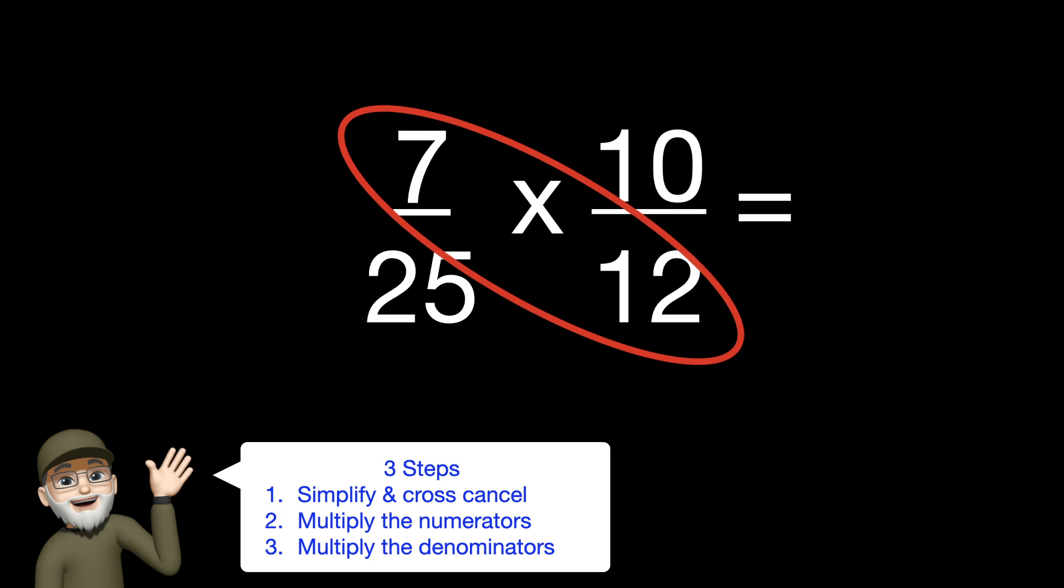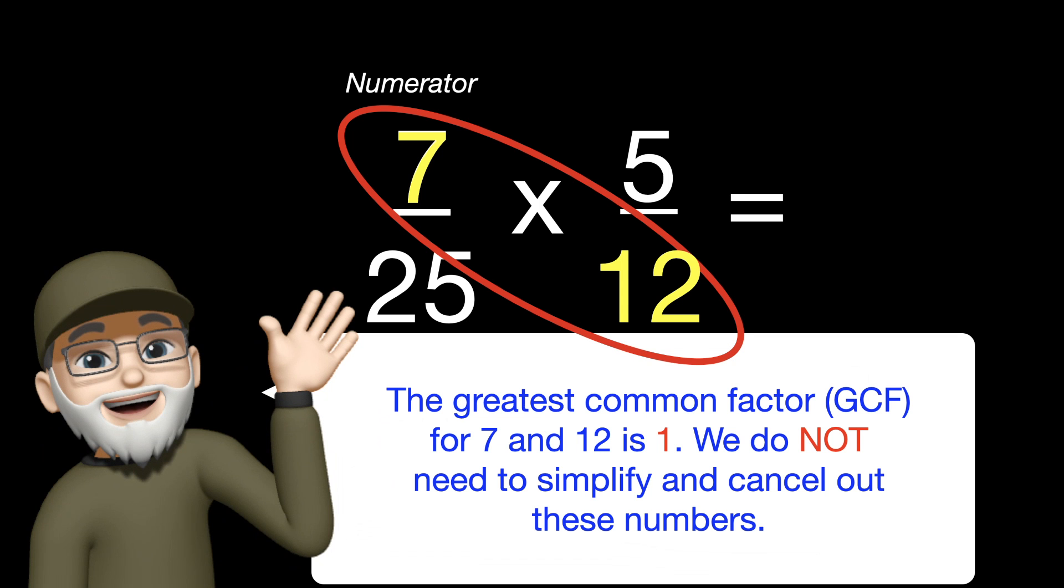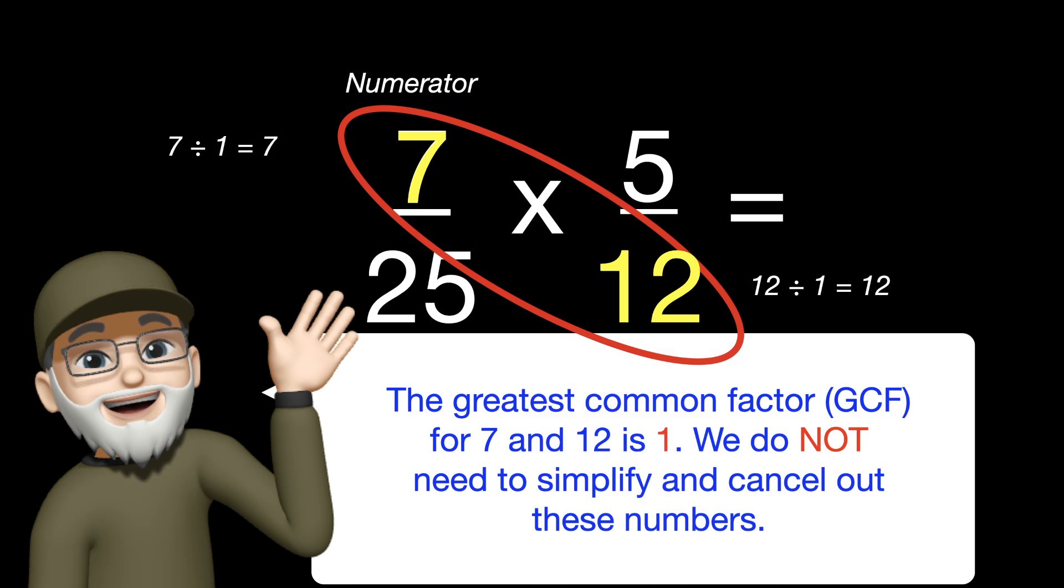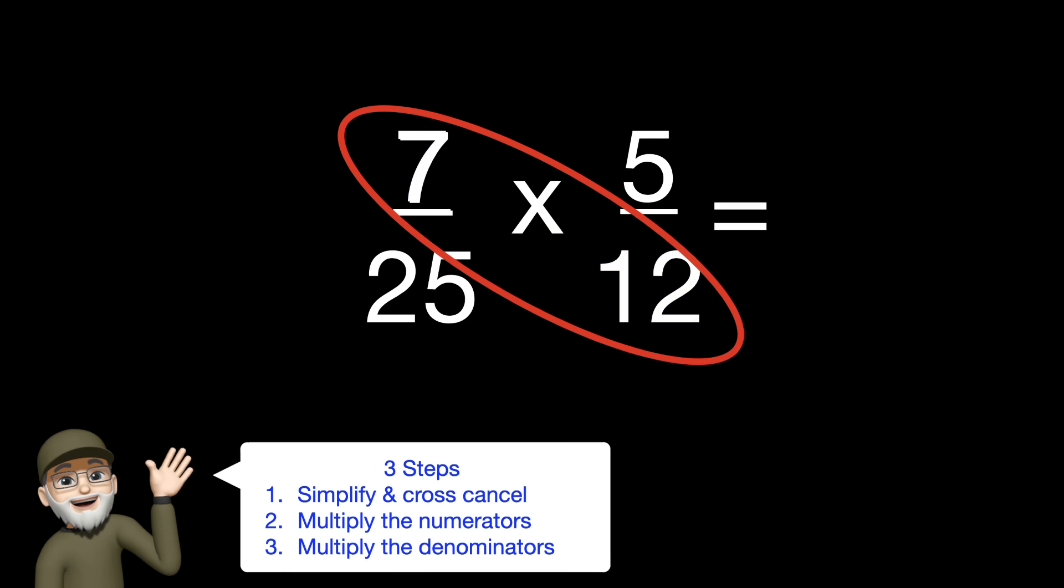Let's start with the 7 and the 12 and ask yourself what is the greatest common factor? Well, for this particular set of numbers, the greatest common factor for 7 and 12 is 1. And we do not need to simplify and cancel out these numbers because when you divide by 1, it's going to be the same number anyway.